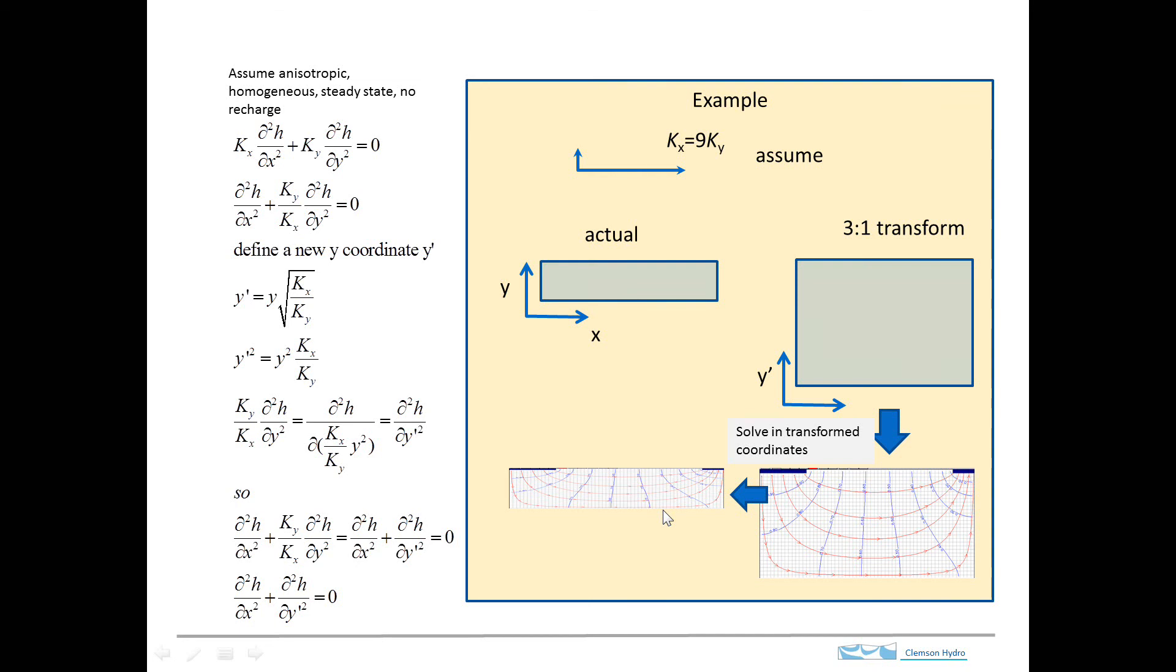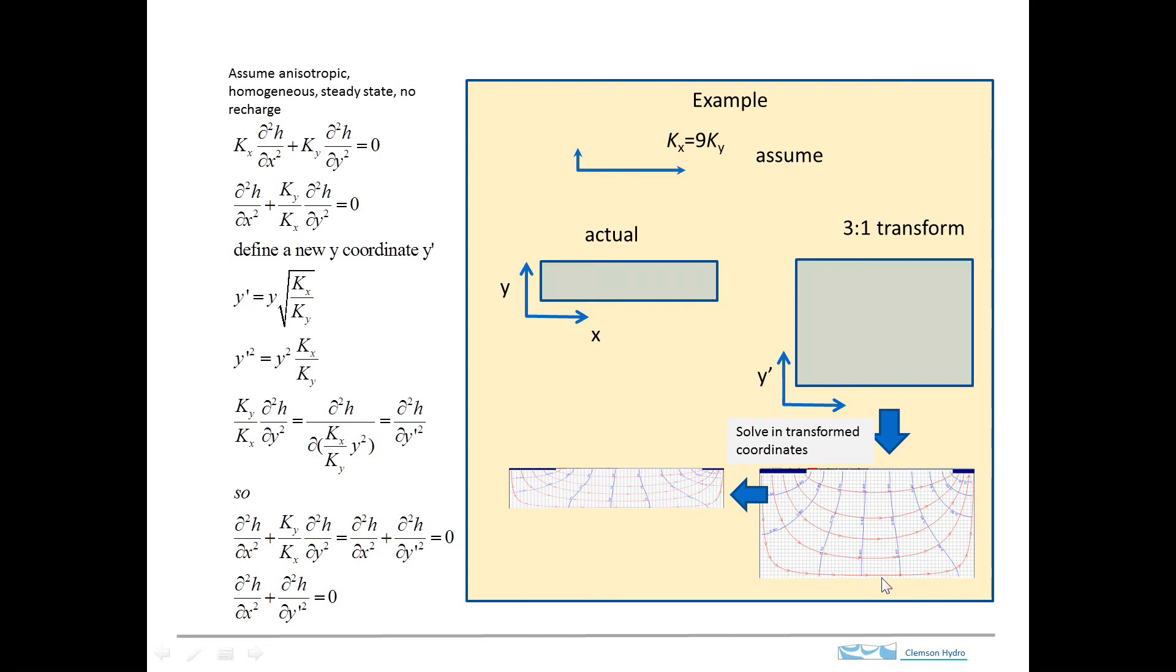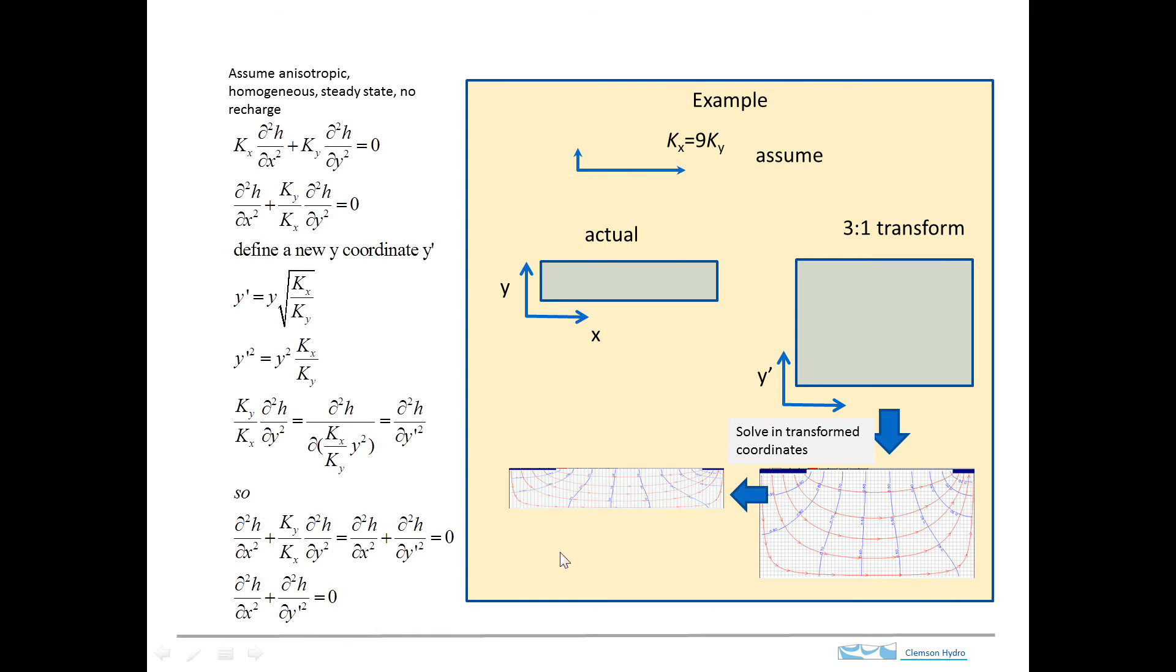And in fact, the way I did this was just to use the picture editor and highlight it and just reduce the height by a factor of 3. That's essentially what is happening when we do this transform. So we end up with our result here. This is the flow net for anisotropic conditions.